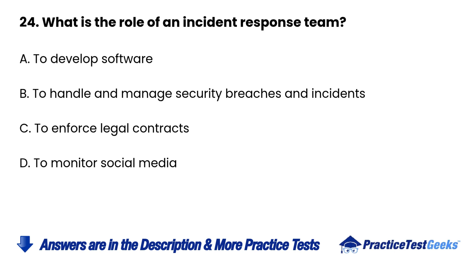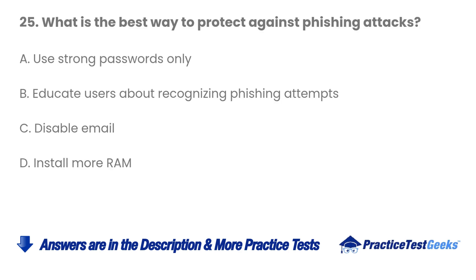Question 24: What is the role of an incident response team? A. To develop software. B. To handle and manage security breaches and incidents. C. To enforce legal contracts. D. To monitor social media. Question 25: What is the best way to protect against phishing attacks? A. Use strong passwords only. B. Educate users about recognizing phishing attempts. C. Disable email. D. Install more RAM.